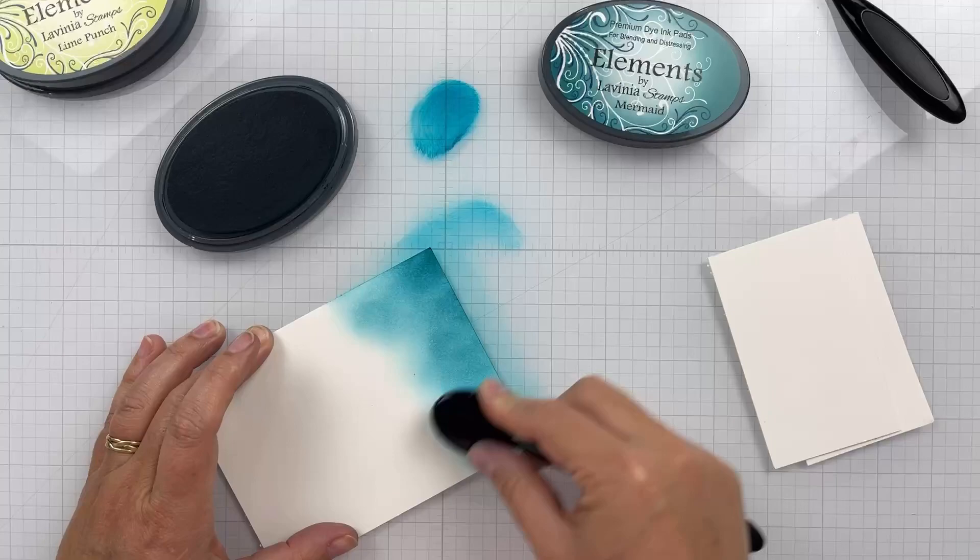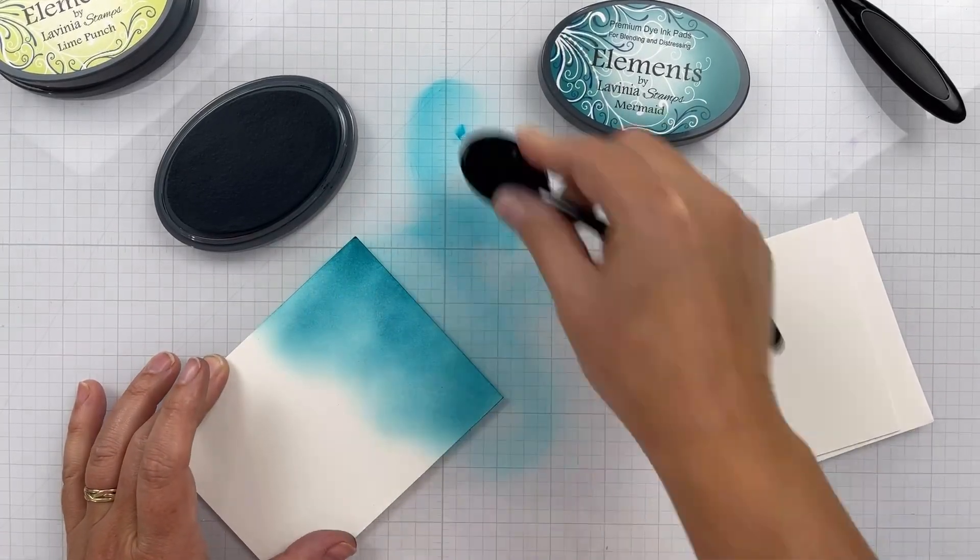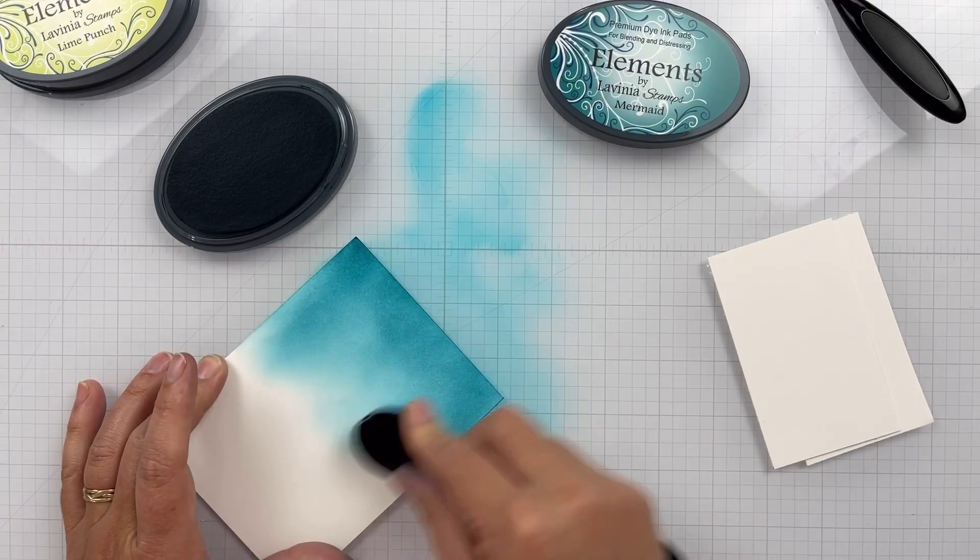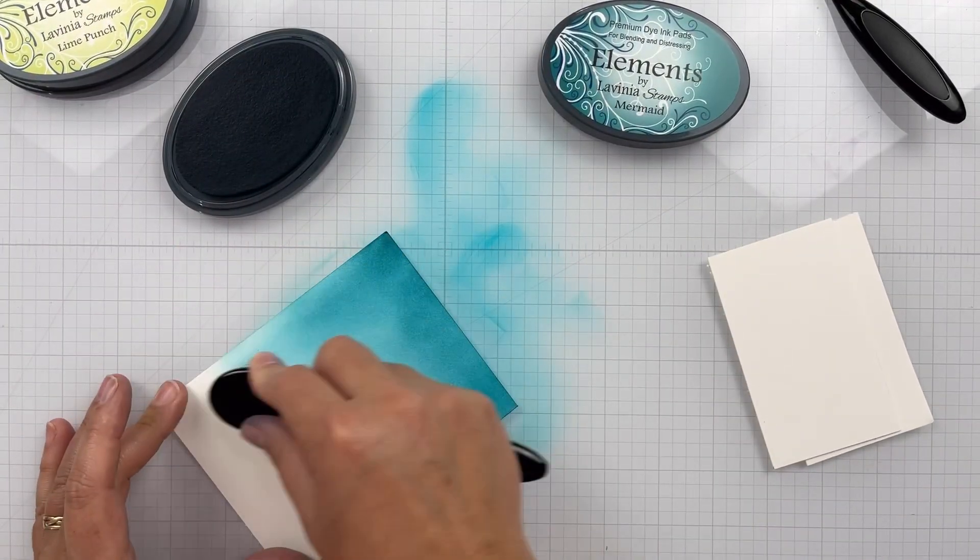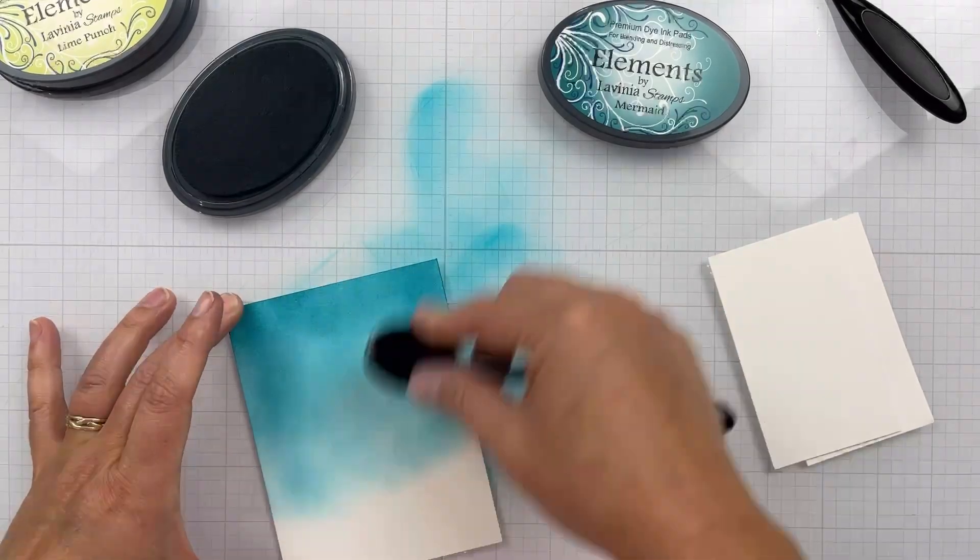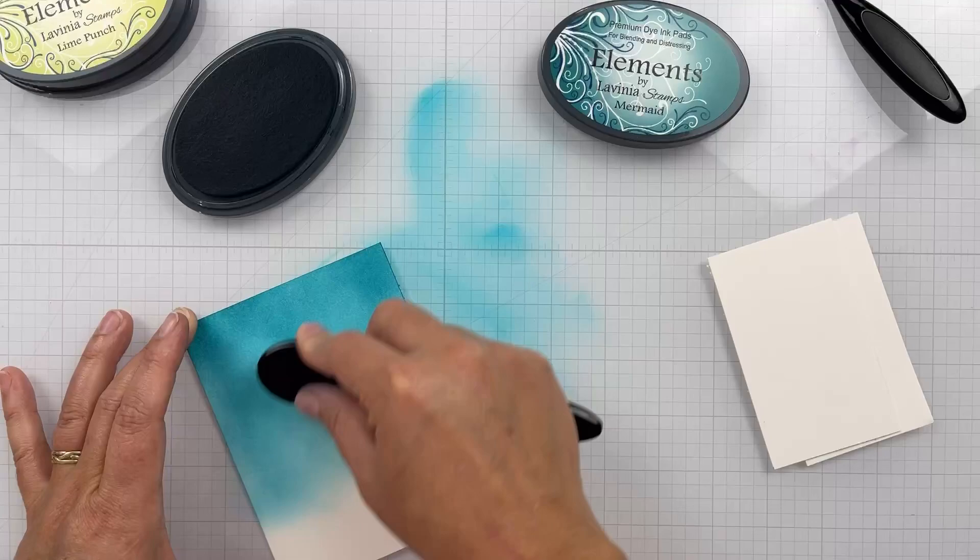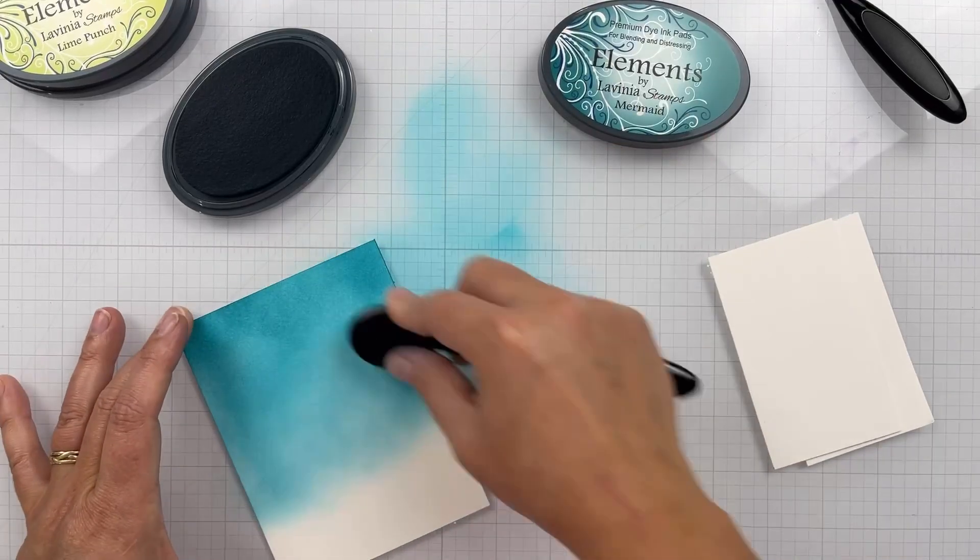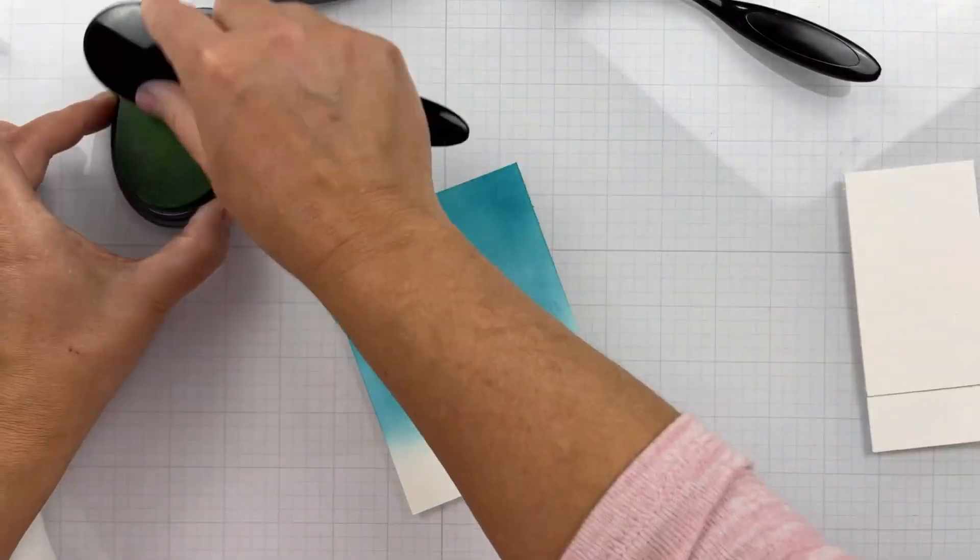I'm going to start with an A2 size card panel. This one I cut down to four by five and a quarter. Coming in with Mermaid and it's a really strong color, so I'm trying not to use too much of it, but I want to keep it deep up at one end and then kind of fade and blend it out towards the middle.